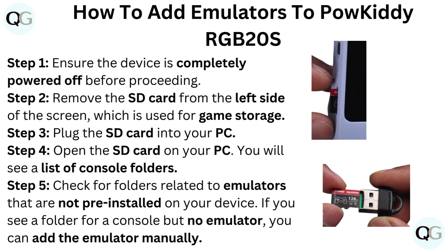Step 4: Open the SD card on your PC. You will see a list of console folders. Step 5: Check for folders related to emulators that are not pre-installed on your device. If you see a folder for a console but no emulator, you can add the emulator manually.